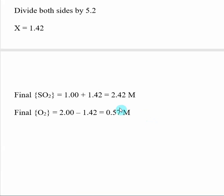So remember I said that at equilibrium, our concentration SO2 is going to be equal to the initial concentration, which is 1.00, plus X. So the equilibrium concentration is going to be 2.42 molar. Same thing for O2. The concentration of O2 at equilibrium is going to be 2.00 minus X. So this was our initial concentration. We subtract off X, and we get our equilibrium concentration of O2, which is 0.57 molar.